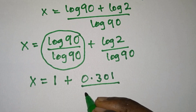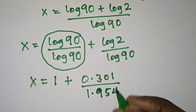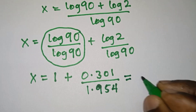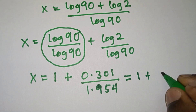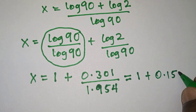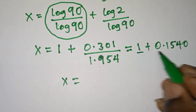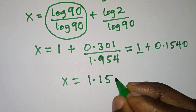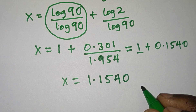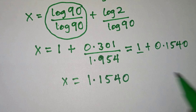Log 90 is the same as 1.954. If we simplify this, we're going to have 1 plus this whole thing, which will also give us 0.1540. So we have x is equal to the sum of these, giving us 1.1540.